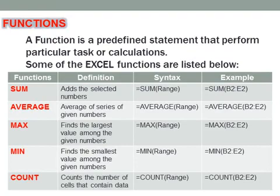The sum function finds the sum of selected values, example: equal to sum B2 colon E2. Average finds the average of numbers: equal to average B2 colon E2. Max gives the largest value: equal to max B2 colon E2. Min finds the minimum value: equal to min B2 colon E2. Count function counts the number of cells that contain data: equal to count B2 colon E2. Your teacher can find subject average, maximum marks, minimum marks just by a few keystrokes.